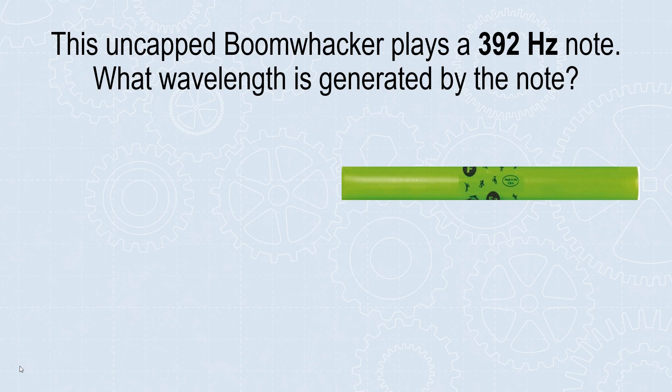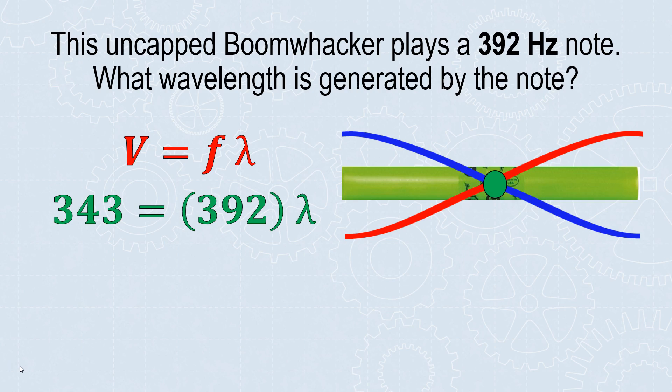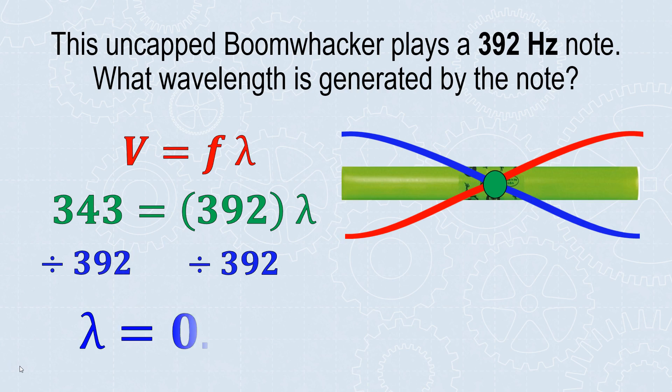This uncapped boomwhacker plays a 392 Hz note. What wavelength is generated by the note? We can look at the wave pattern in this instrument - it ends with antinodes on both sides, node in the middle. But we don't need to know that half a wavelength fits in here to find the wavelength. We're given a frequency and we know sound travels at 343 m/s. So now we solve for wavelength using v = f × λ. Dividing both sides by 392 gives a wavelength of 0.875 meters.